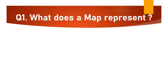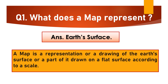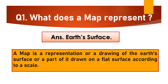The first question for today is: what does a map represent? The answer is Earth's surface. A map is a representation or a drawing of the Earth's surface or a part of it drawn on a flat surface according to a scale.